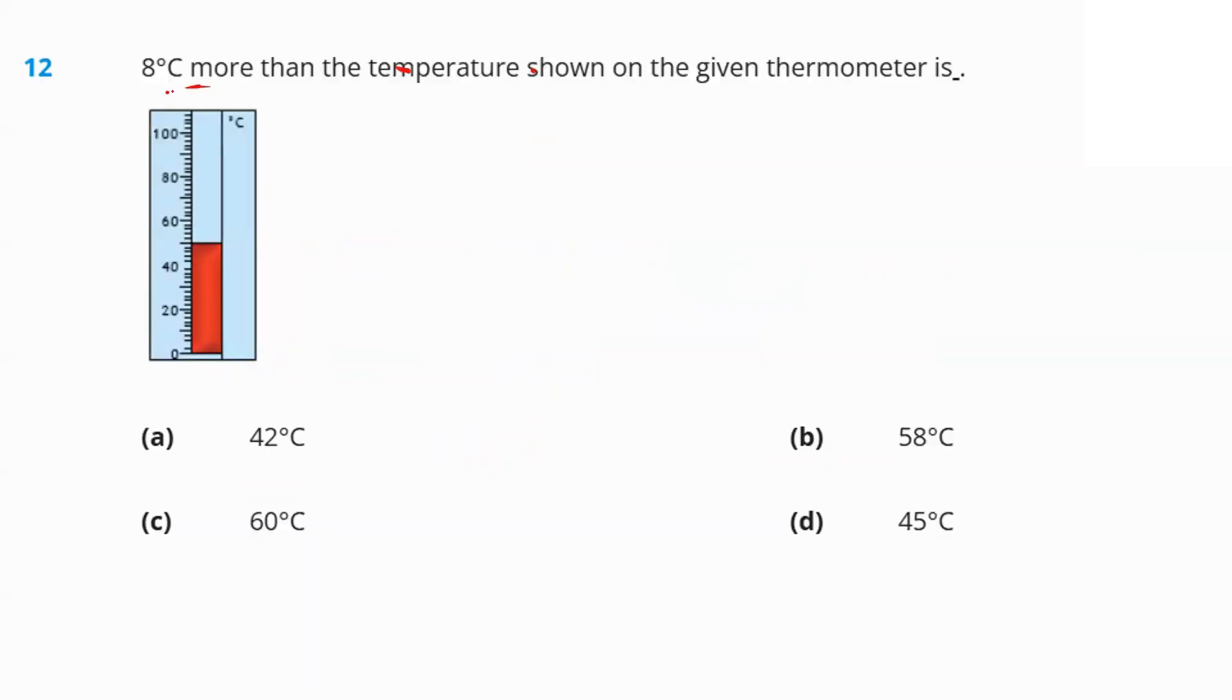Next, question number 12. Eight degrees Celsius more than the temperature shown on the given thermometer. What's the temperature shown on the given thermometer? Exactly between forty and sixty, that's fifty. Eight degrees more than that, that's fifty-eight. Option B is the answer.